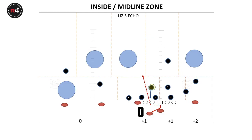In the previous module we posed the question: how do you know whether to run inside or midline zone, and how do you know whether to run strong or weak? The answer to that is based on the run accelerator grades. You must understand how the inside and midline zone schemes affect the run accelerators and use their strengths and weaknesses against them. Let's look at how.